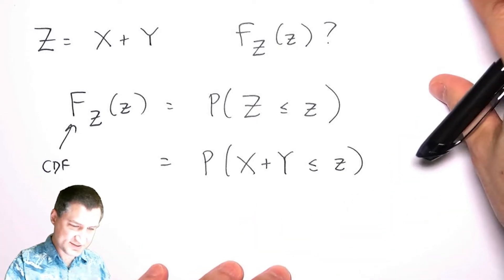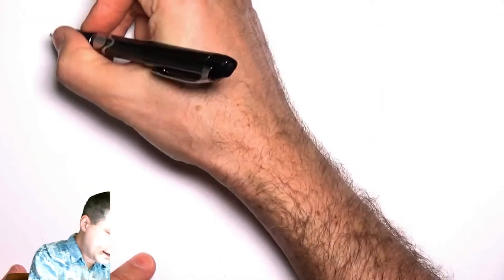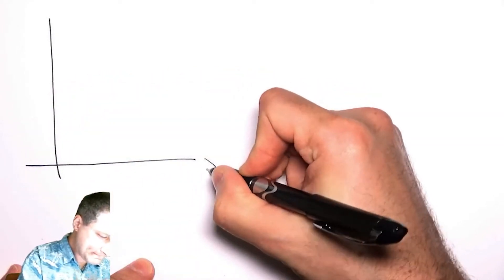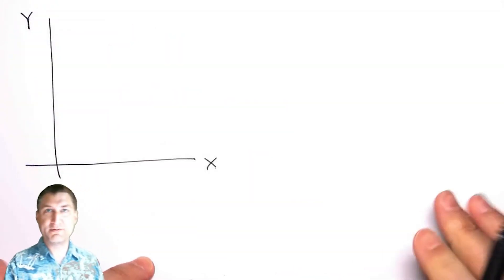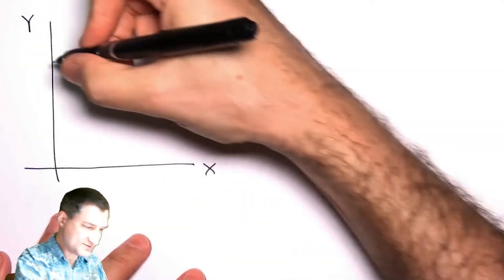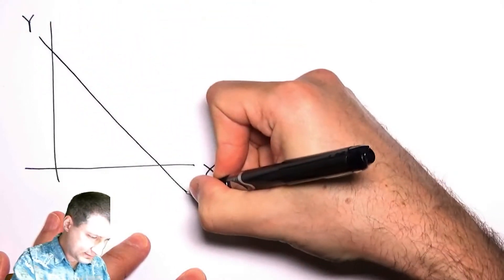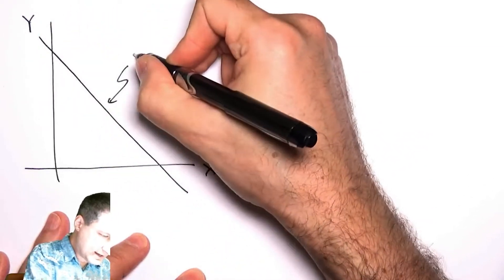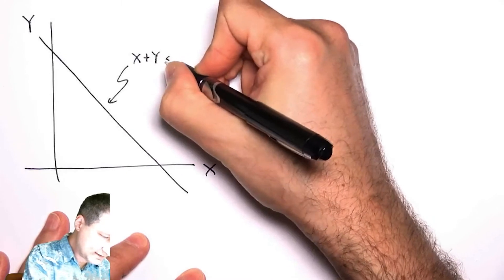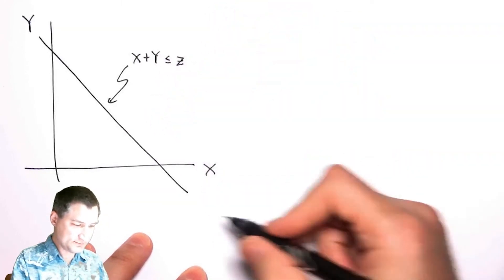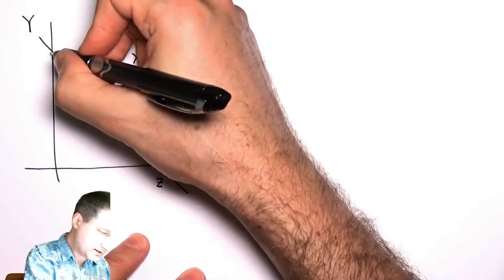So let's think about this. I have X and Y and I want the sum of those things to be less than or equal to Z. So this is the line here: X plus Y is less than or equal to little z.